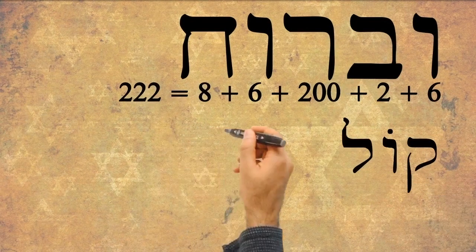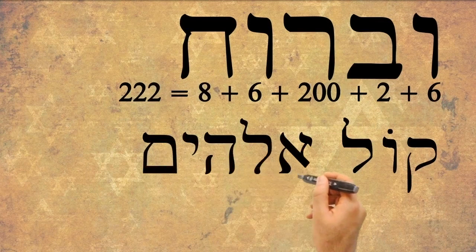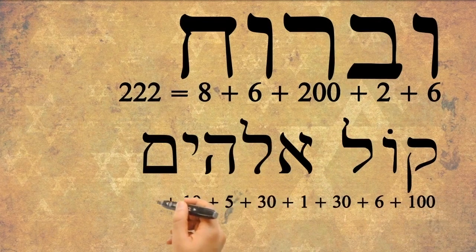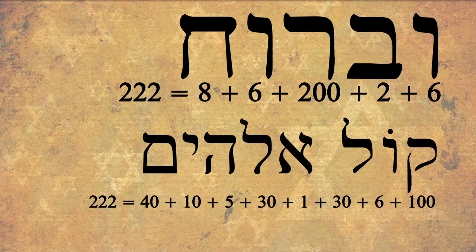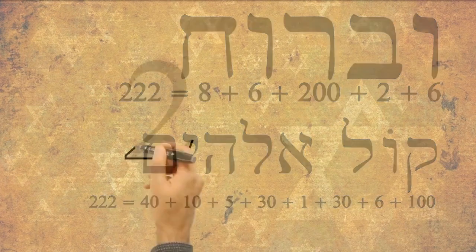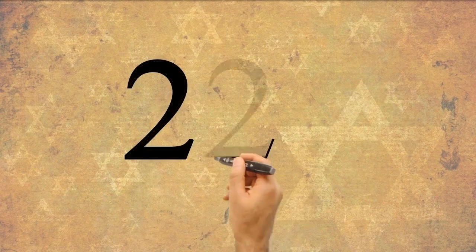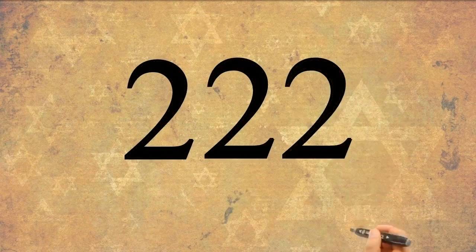This is the same numeric value for the voice of God, kol Elohim, that Adam and Eve heard calling to them in the garden in Genesis 3, verse 8. In Scripture, whenever a number like 2 is raised to its triplet, 222, it denotes a place of power and authority. It means stop, pay attention.